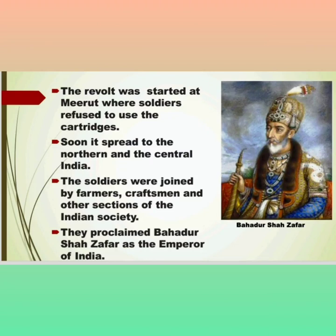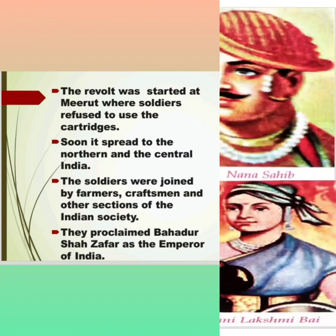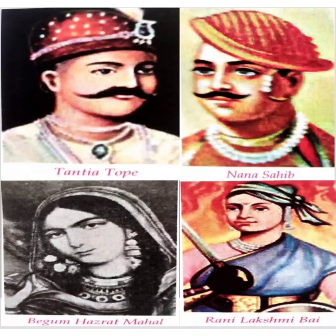Soon the revolt spread to northern and central India. The soldiers were joined by farmers, craftsmen, and other sections of Indian society. They proclaimed Bahadur Shah Zafar as the emperor of India. The leaders of this revolt were Mangal Pandey, Nana Sahab, Tatiya Toppe at Kanpur, Rani Lakshmi Bai at Jhansi, Begum Hazrat Mahal of Awadh, and Kunwar Singh, among others. However, the British termed this revolt as the Mutiny of 1857.